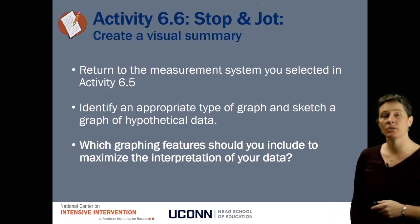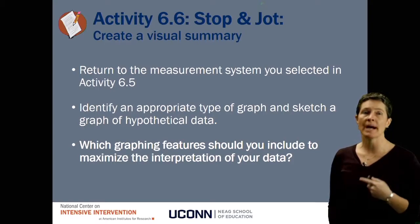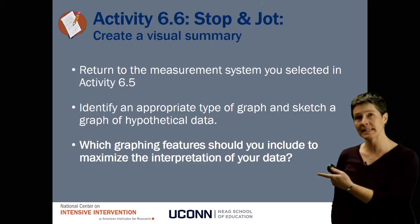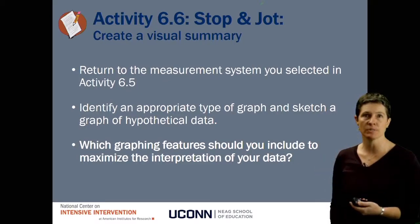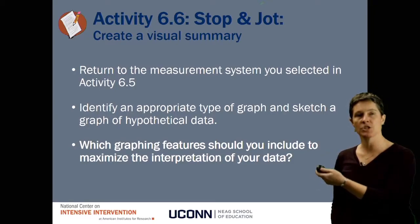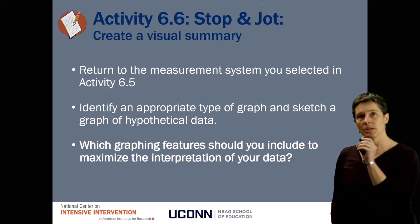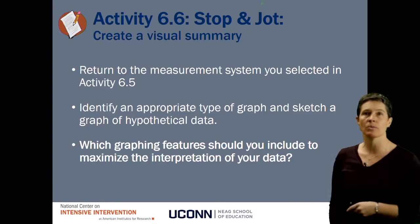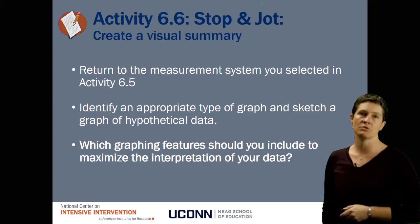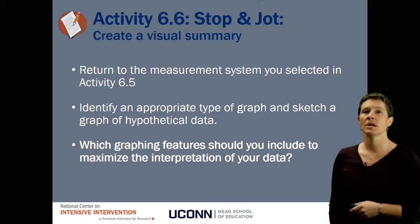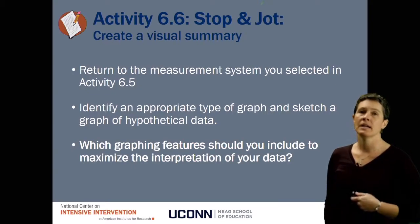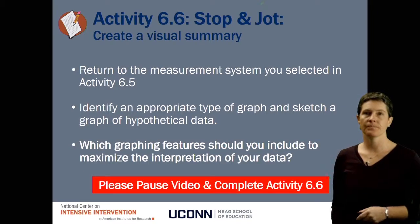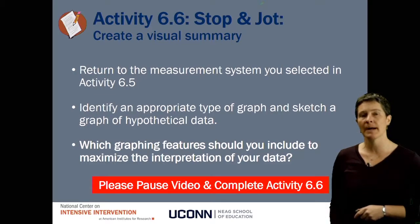Now, take a minute to do this stop and jot activity. Go back to the behavior and measurement system you've been working on throughout this module — most likely from activity 6.5, where you chose a measurement system aligned with the dimension of behavior you operationally defined. Based on that measurement system, identify an appropriate type of graph and sketch out what hypothetical data might look like for a student in your class. Think carefully about which graphing features to include and why, to maximize the interpretation of your data. Pause the video and complete that now.